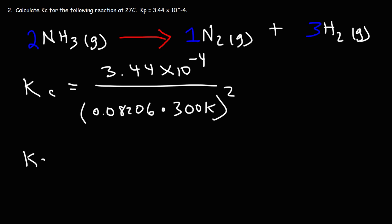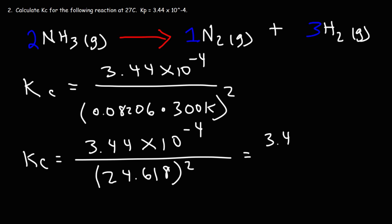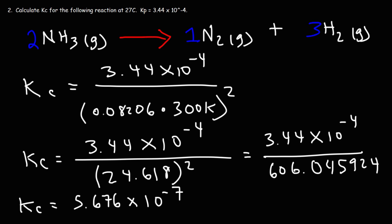So like before, we're going to take this one step at a time. Let's begin by multiplying 0.08206 by 300. You should get 24.618. Next, we're going to square that number. 24.618 squared is equal to 606.045924. So now, let's divide those two numbers. And we're going to get a Kc value of 5.676 times 10 to the minus 7. So that's the equilibrium constant for concentration.